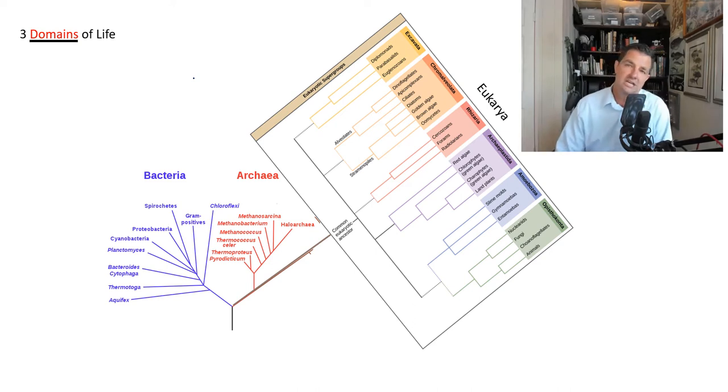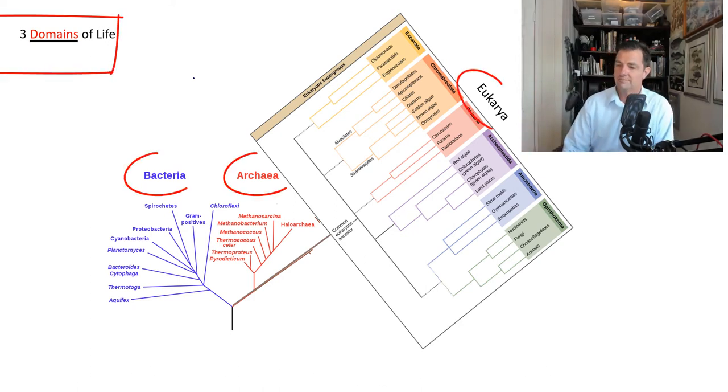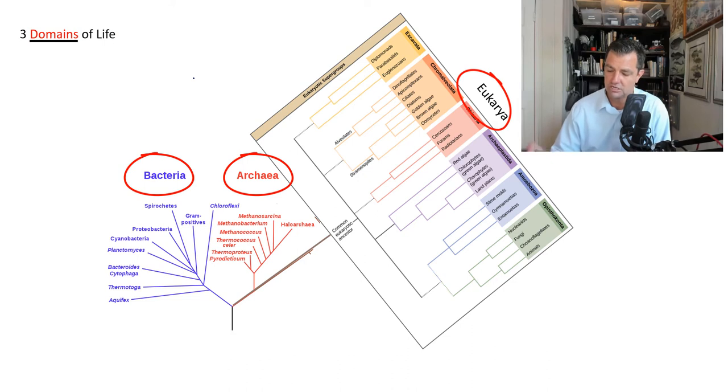We can take all these forms of life and then break them down into three very distinct categories we call the three domains of life. Those are the bacteria, the archaea, and the eukarya. This is called the three domain system or the three domains of life.